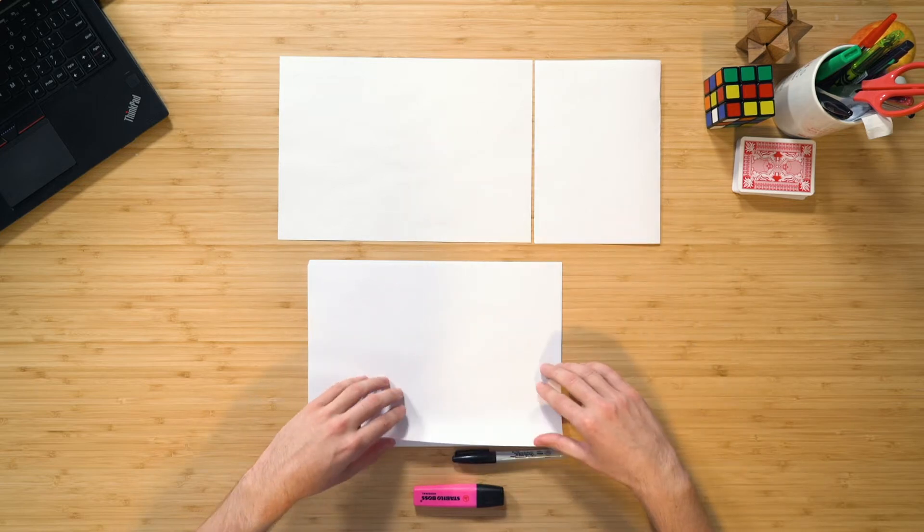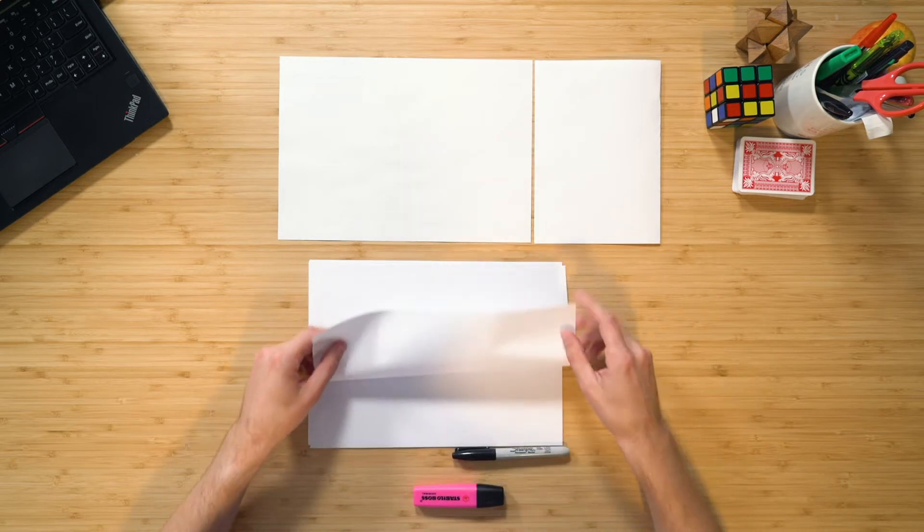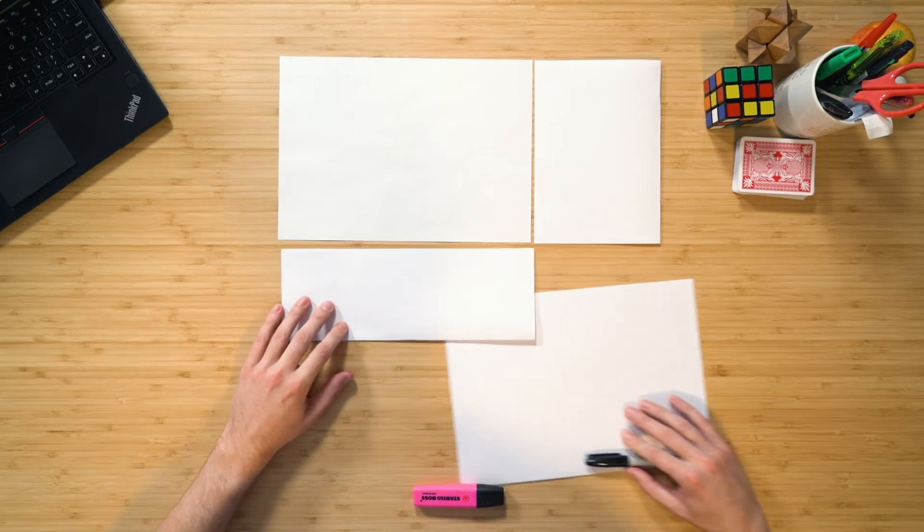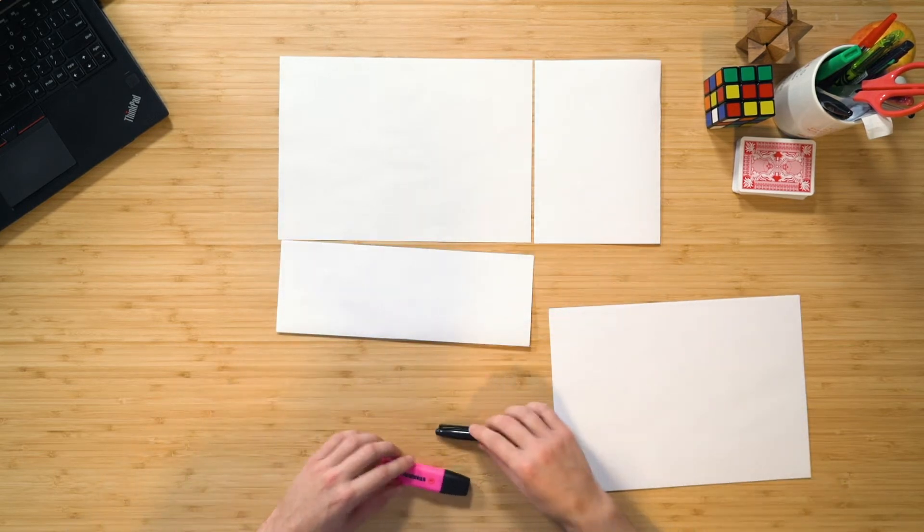So that would be one and a half. And then I'm going to multiply it by one and a half as well the other way. So that's one and a half pieces of paper.